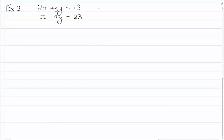This is Example 2. 2x plus 3y equals 13, Equation 1, and x minus 4y equals 23, Equation 2. This will be looking a lot more similar to the ones from the Elimination Method, and, of course, you could use the Elimination Method here.